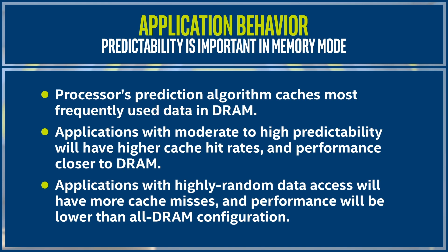If the application's data access pattern is highly random, you get more cache misses and performance will be lower than if the system had been populated with only DRAM. Most applications are predictable enough that performance with Optane Persistent Memory is very close to an all-DRAM configuration, but performance in a few benchmarks and applications can fall off noticeably. As with any new technology, you should test your applications to make sure you'll meet your service level agreements.